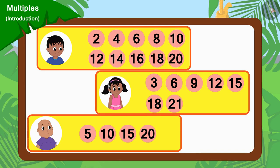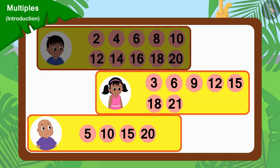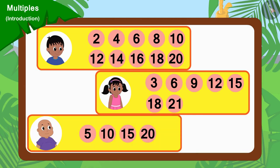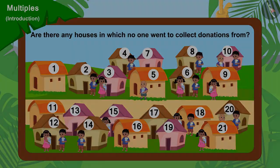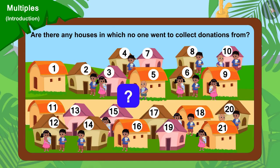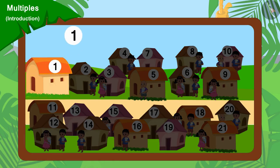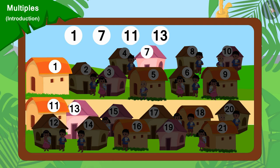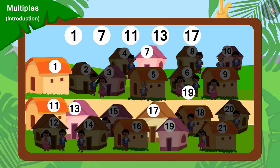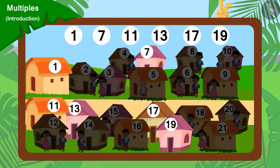Here, the numbers of houses from where Raju, Pinky and Bablu went to collect donations are written. Are there any houses in which no one went to collect donations from? If you want, you can stop the video and find the answer. Yes, house numbers 1, 7, 11, 13, 17 and 19 are the houses in which nobody went to collect donations from.